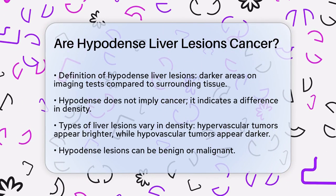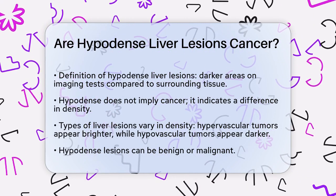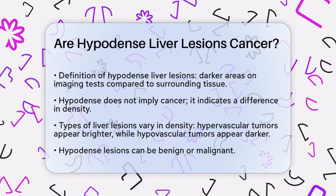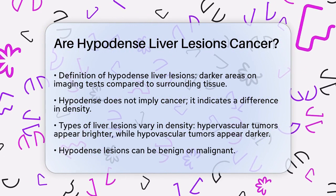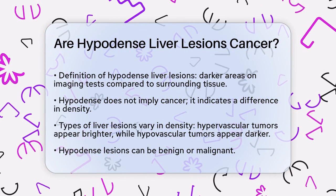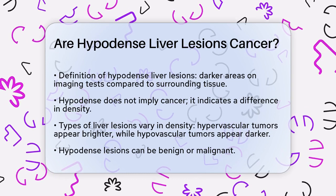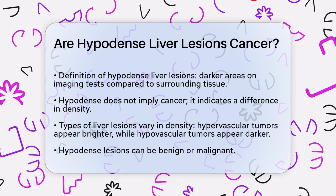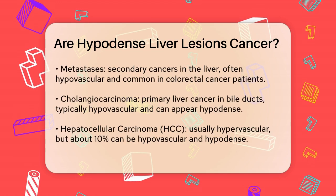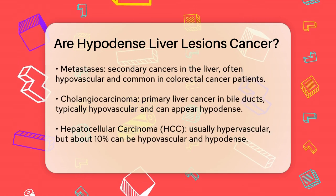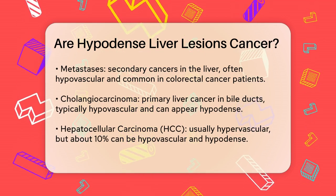For instance, hypervascular tumors, which are rich in blood vessels, tend to be hyperdense — brighter in the arterial phase of a CT scan because they take up the contrast quickly. On the other hand, hypovascular tumors, which have fewer blood vessels, are more likely to appear hypodense, darker, in the portal venous phase because they don't take up as much contrast.